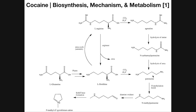The putrescine, then through a series of reactions such as methylation and oxidation of the amine to an aldehyde, is going to be converted to a molecule which will then undergo an intramolecular cyclization, whereby it becomes N-methyl delta-1-pyrolinium cation. This is the first major stage of cocaine synthesis — you have to make this ringed compound.